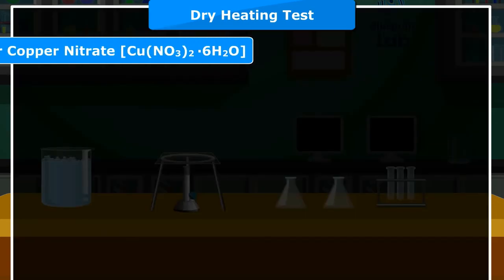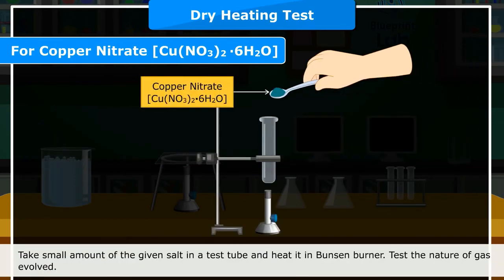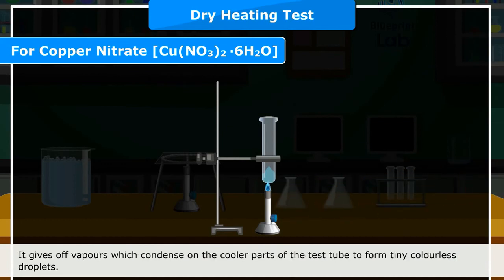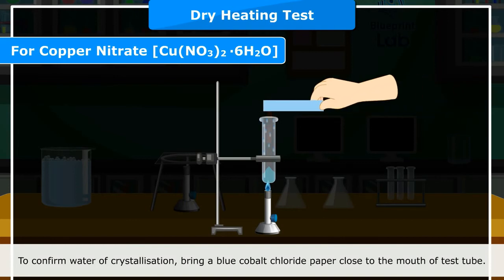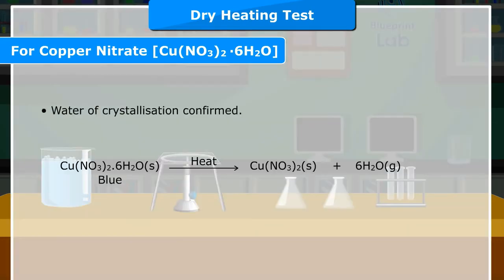For Copper Nitrate (Cu(NO3)2·6H2O): Copper nitrate is a bluish-green crystalline solid. Heat a small amount in a Bunsen burner and test the nature of gas evolved. It gives off vapors which condense on the cooler parts of the test tube to form tiny colorless droplets. Bring a blue cobalt chloride paper close to the mouth of the test tube — the paper turns pink, confirming water of crystallization. Cu(NO3)2·6H2O (solid, blue) on heating gives Cu(NO3)2 (solid) + 6H2O (gas).